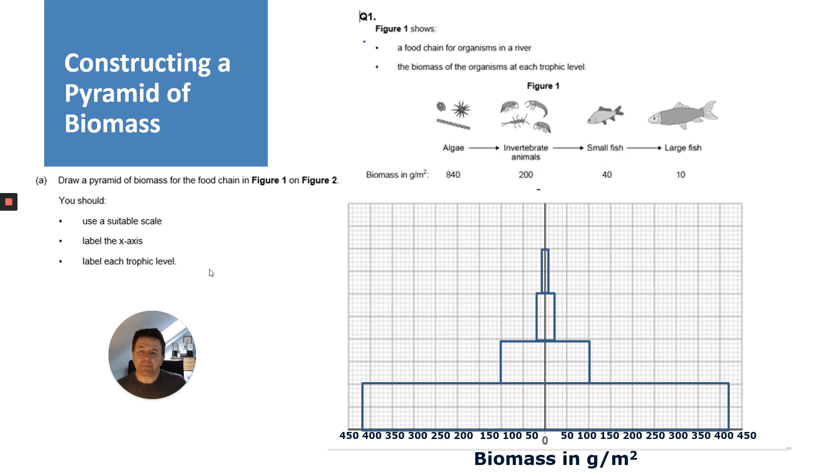Now I need to label each trophic level. I'm going to label it with the name of the organism. You could say trophic level one, trophic level two, trophic level three, trophic level four, or you could say producer, primary consumer, secondary consumer, tertiary consumer. But here I've just labeled them using the animal species that they've given in the question. That's how you answer a question when you need to construct a pyramid of biomass.